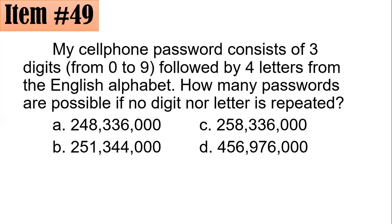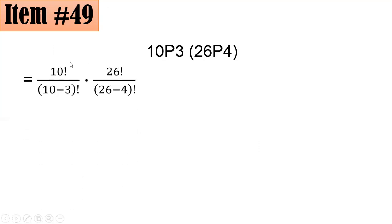This involves permutation without repetition. The English alphabet has 26 letters, and there are 10 digits (0 to 9). So there are 10P3 ways to choose the 3 digits and 26P4 ways to choose the 4 letters. That gives 10 factorial over 7 factorial times 26 factorial over 22 factorial.